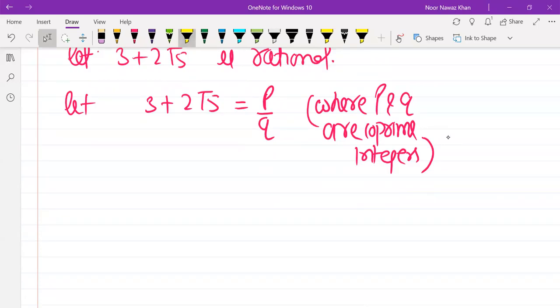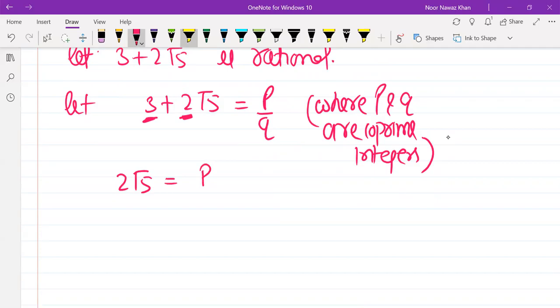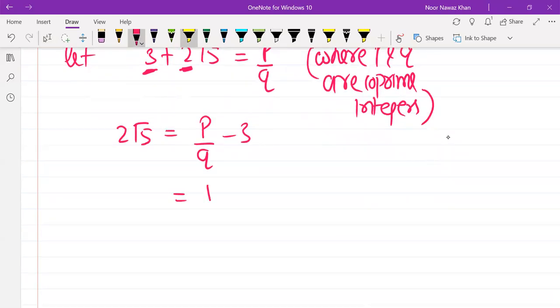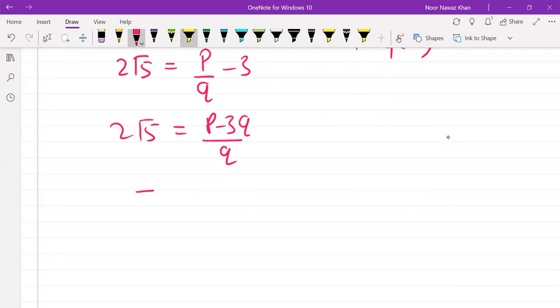We have rational numbers on the left side. We have to move from the left side. First of all, take 3. So that will be p by q minus 3. Take LCM here. So, p minus 3q upon q. That is 2 root 5. Take 2 also. So root 5 equals p minus 3q upon 2q.